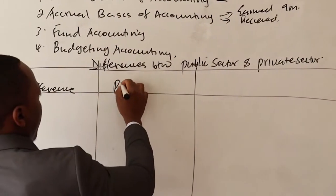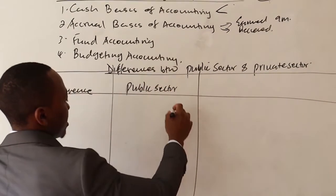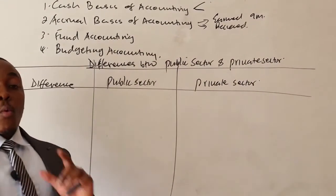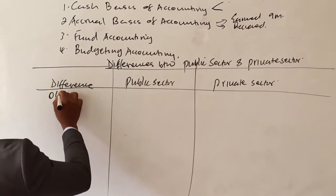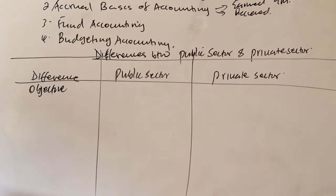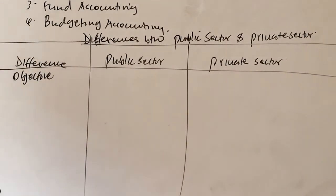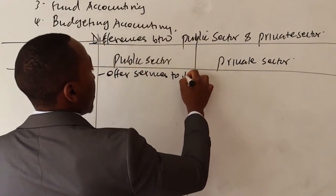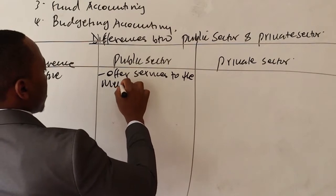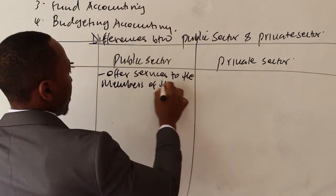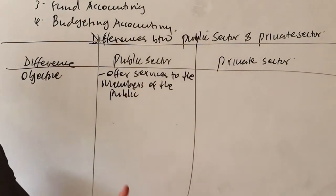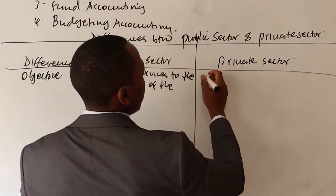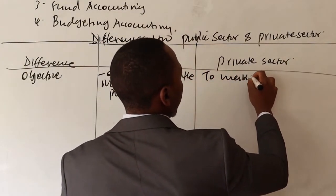Here we have the public sector on one side and the private sector on the other. The first difference is about the objective. For the public sector, their main objective is to offer services to the citizens. But for the private sector, the major objective is to make profit.